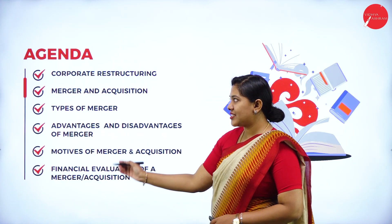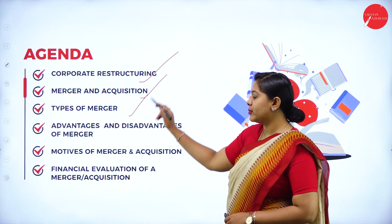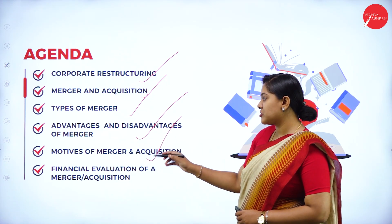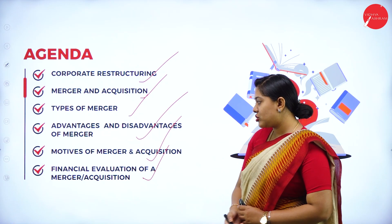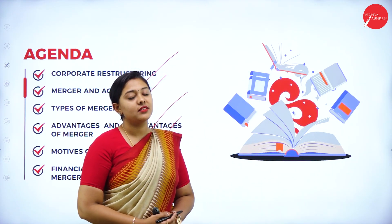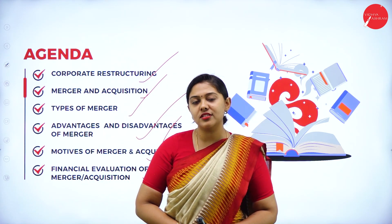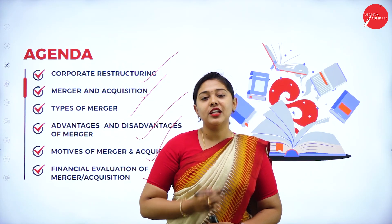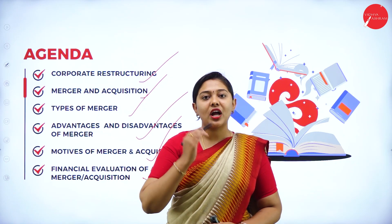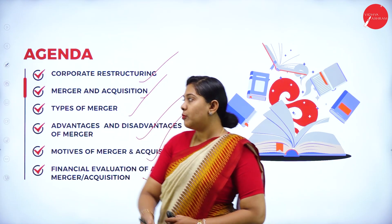The topics for today's discussion are corporate restructuring, merger and acquisition, types of merger, advantages and disadvantages of merger, motives of merger and acquisition, and financial evaluation of merger and acquisition. In the last class, we completely discussed dividend decision, Walter's model, and Gordon's model. The chapter is for 15 marks in your examination, so kindly go through the previous chapter, unit three, dividend decision.